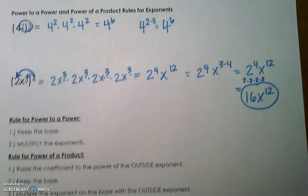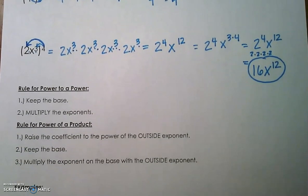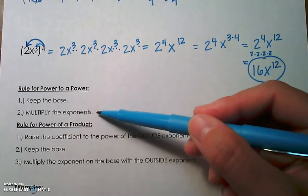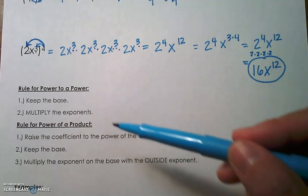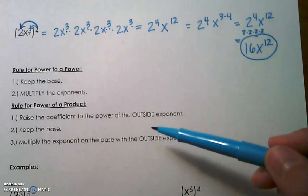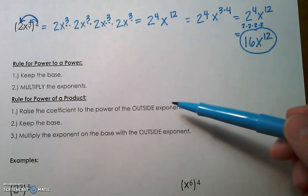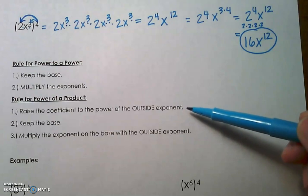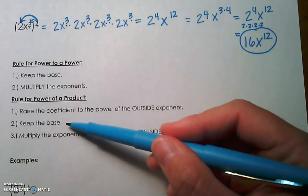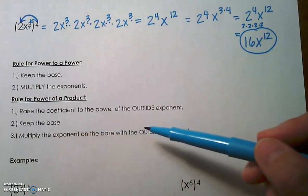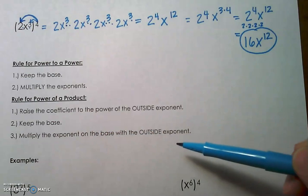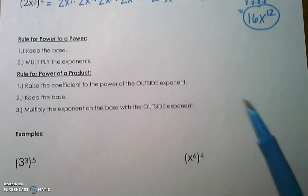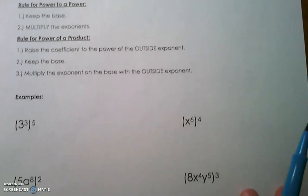So our power to a power rule tells us to keep the base and multiply the outside exponent times the inside exponent. The power of a product rule raises the coefficient to the outside exponent, keeps the base, and then multiplies the exponent on the base with the outside exponent. We'll practice those a few times with these examples.